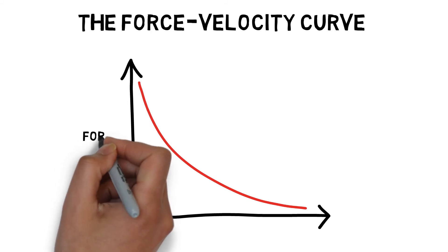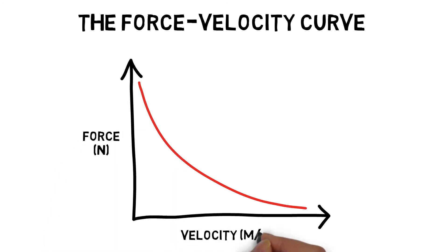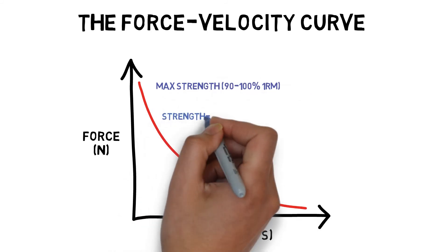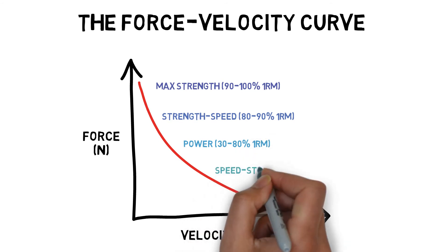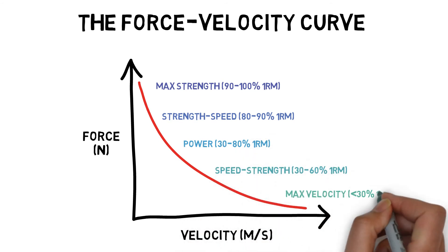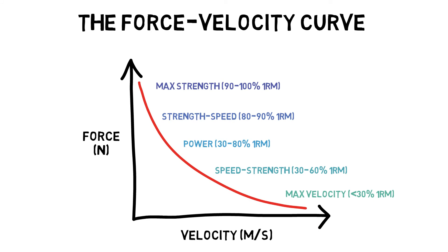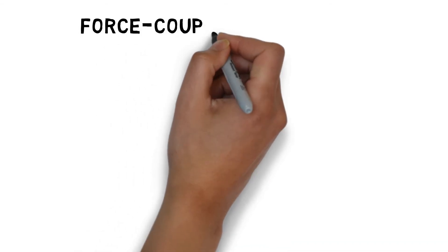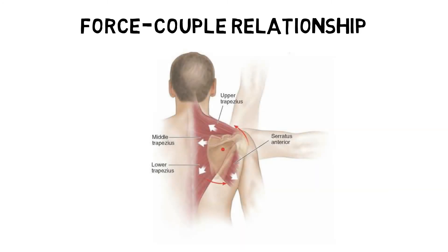The force-velocity curve is the inverse relationship between force and velocity. As the velocity of a concentric contraction increases, its ability to produce force decreases. A one-repetition max, for example, will produce the greatest amount of force but minimal velocity, whereas a maximal velocity movement will produce minimal force. Muscles do not work in isolation to produce movement. A force-couple relationship refers to groups of muscles that move together to produce movement around a joint. Each muscle in a force couple has a different attachment site, pulls in different angles, and creates a different force on the joint, but all work together to produce movement. For example, the upper, middle, and lower trapezius along with the serratus anterior all work together to rotate the scapula upwards.